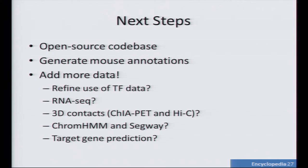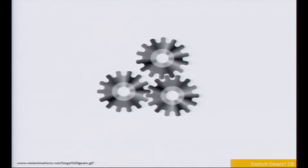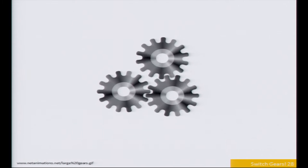The next steps for this are: I actually have to open source it, finish up and clean up the code a bit more, generate this primordial encyclopedia for mouse annotations, and then figure out what other data to add. All right, changing gears slightly — Factorbook.